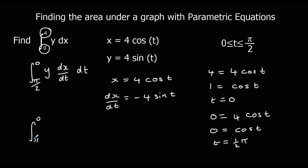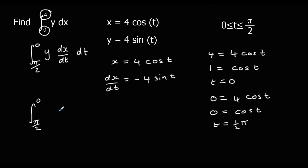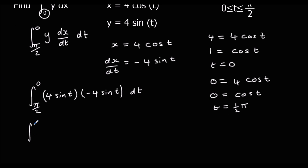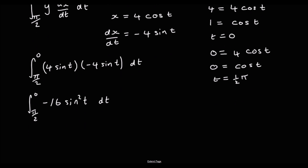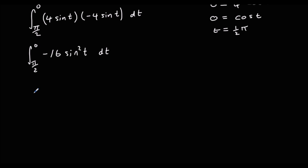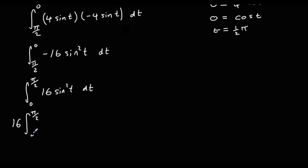So we have the integral from 0 to π/2 — but the larger value is on the bottom. We've got y times dx/dt: 4 sin t times −4 sin t, giving −16 sin²t with respect to t. We can switch the two t values and change the sign, turning it into a positive: 16 times the integral from 0 to π/2 of sin²t with respect to t.